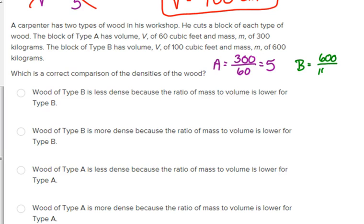For block B, the mass is 600. The volume is 100, so its density is 6. The higher the number for the density, the more dense it is. Okay? There's nothing confusing about that relationship. It is what it is. If you get a bigger number for the density of B, B is more dense. So, let's look at our options here. Wood of type B is less dense. Well, I know that one is automatically incorrect because B is more dense because 6 is greater than 5.